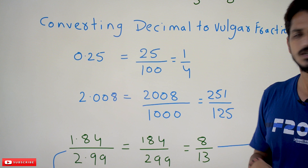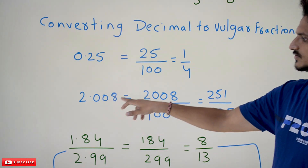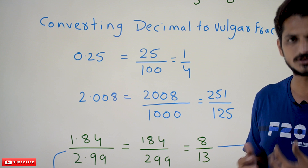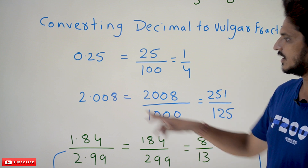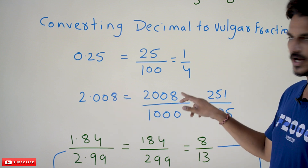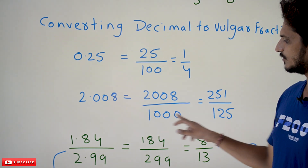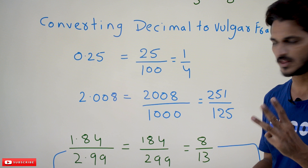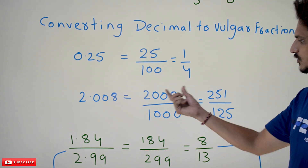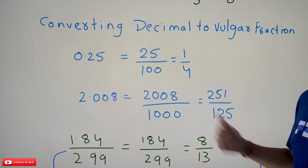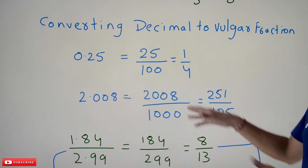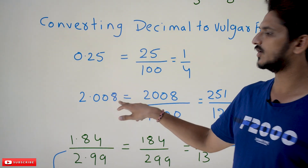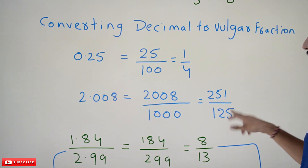One more example: 2.008. After the dot, how many digits are there? Three digits. So remove the dot to get 2008, divided by 1 followed by three zeros — that is 2008/1000. If you simplify, you get 251/125. Dividing 251 by 125 gives back 2.008.